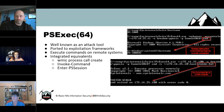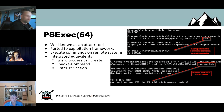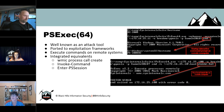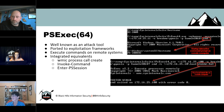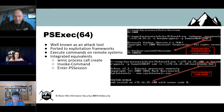PsExec is probably the most well-known tool — if you're a pen tester or sysadmin, you've heard of it. It allows you to execute commands remotely on another machine. It's been built into other exploitation frameworks like Metasploit, Cobalt Strike, and others. These examples show you can run an interactive command shell on another system — you have to have credentials, of course, but credentials aren't usually too hard to come by. The second example shows how to host a batch file locally on a file share and run that batch file on the remote system.